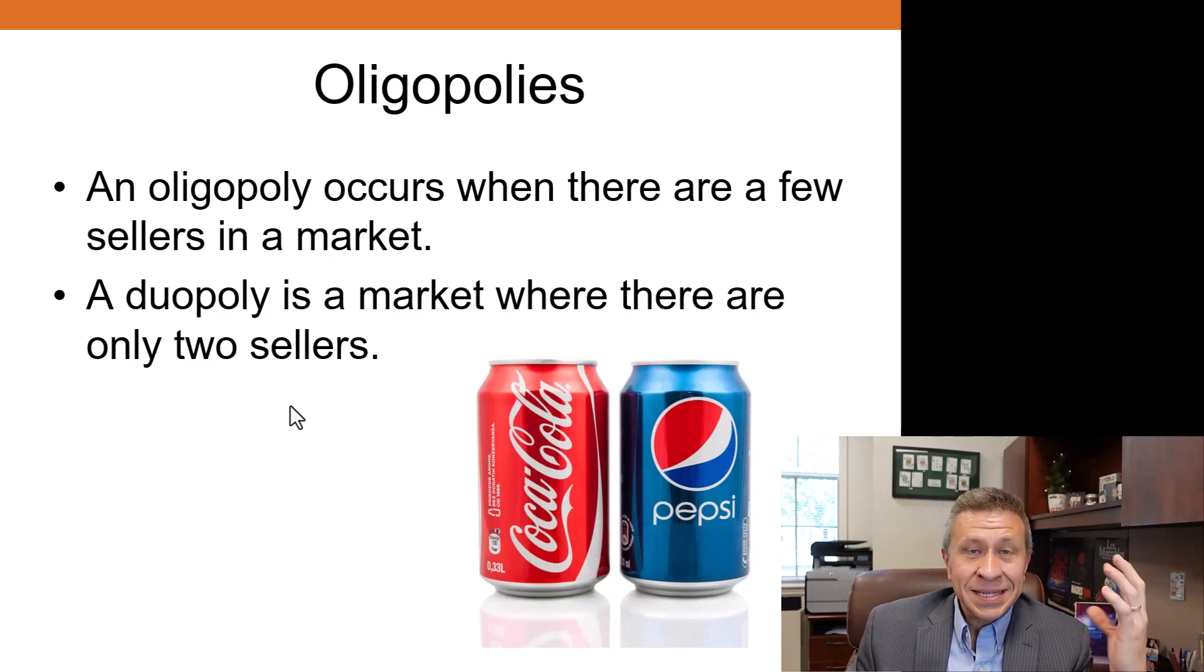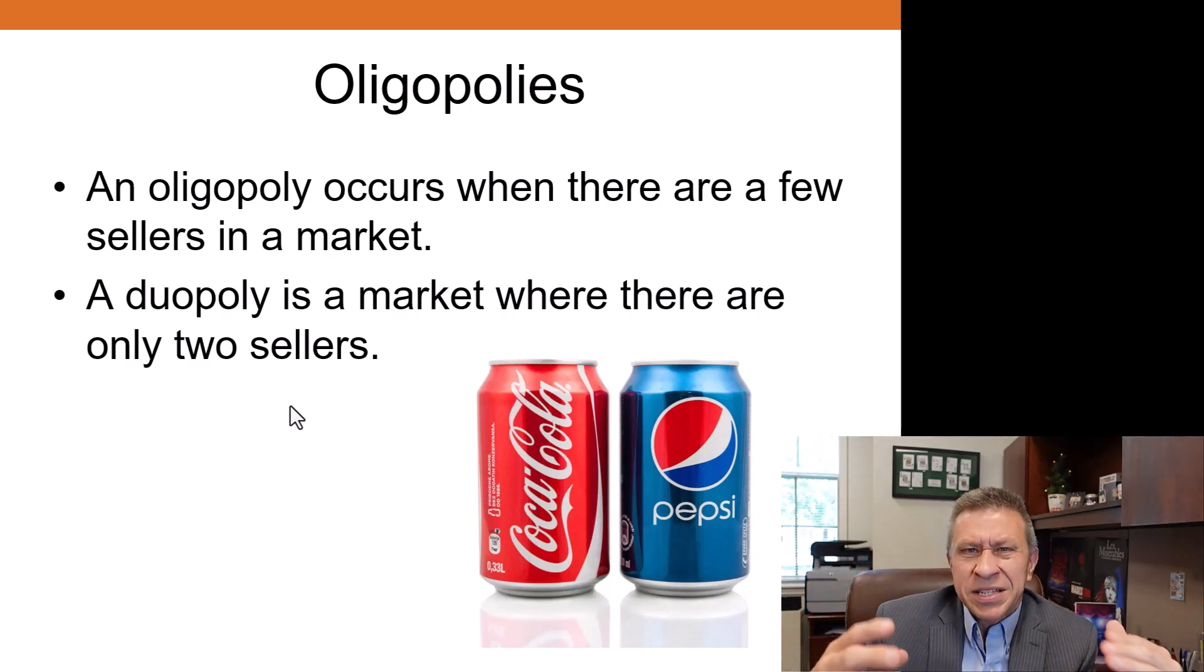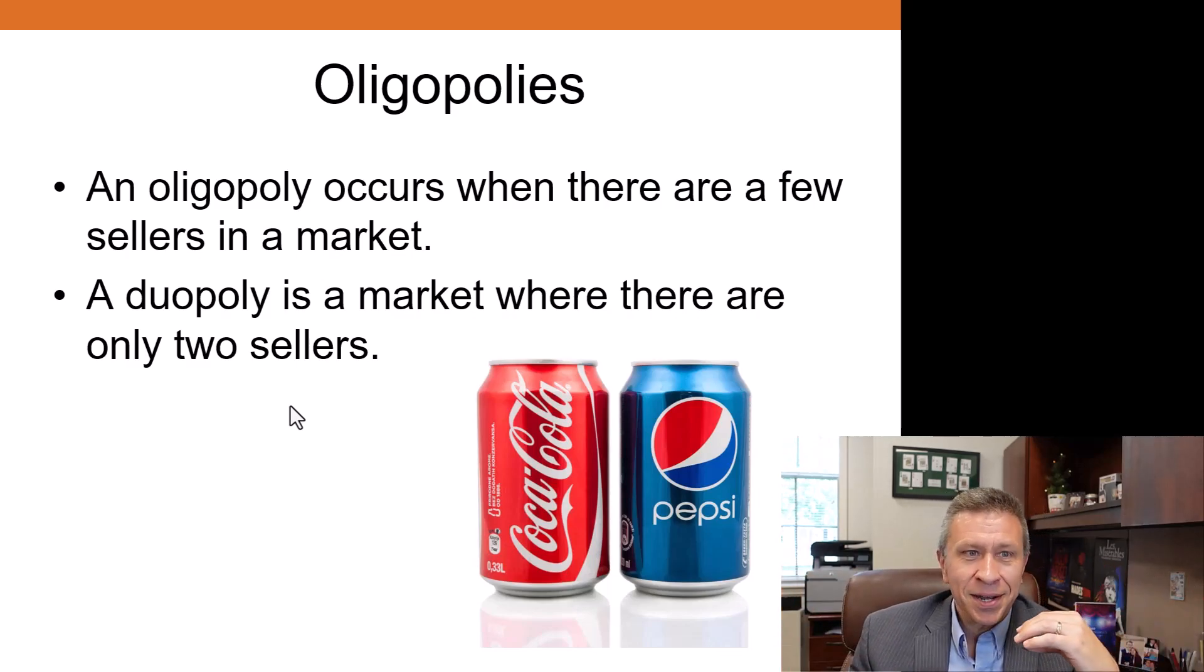In a duopoly there are exactly two firms that have a massive portion of the market, massive control over the market. Coke and Pepsi—you see that on the screen—that's kind of a classic example of a duopoly.